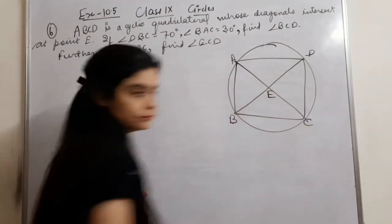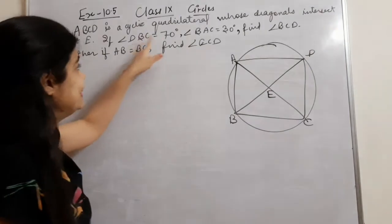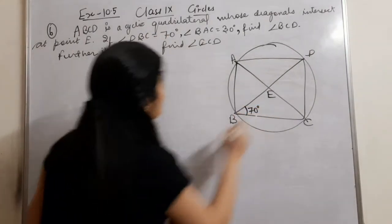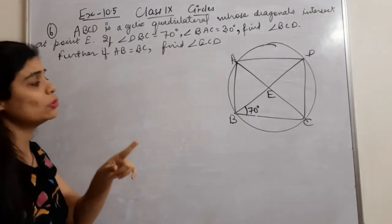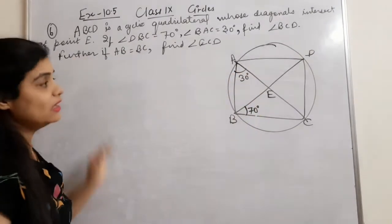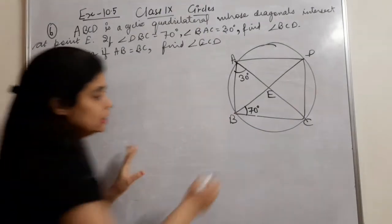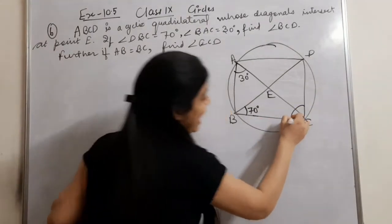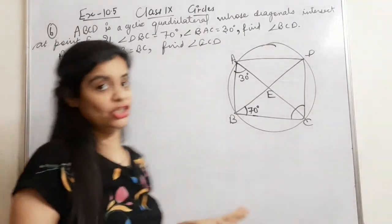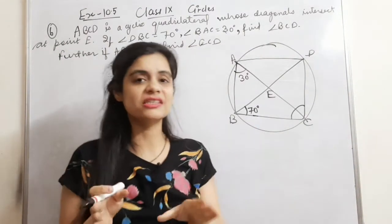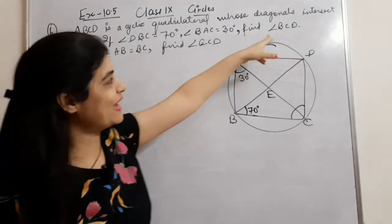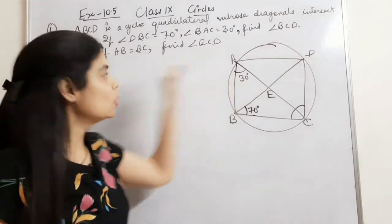Angle DBC is equal to 70 degrees and angle BCD is equal to 30 degrees. We need to find angle BCD. This is easy using angles in the same segment. Since arc BC subtends equal angles, angle A will also equal 30 degrees.